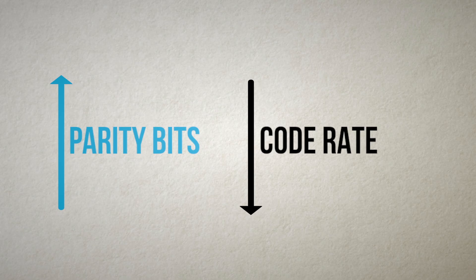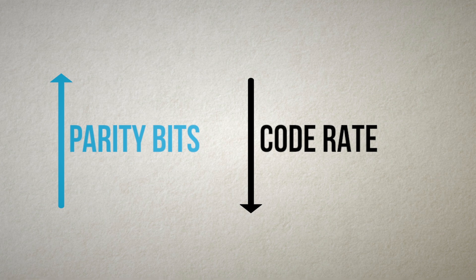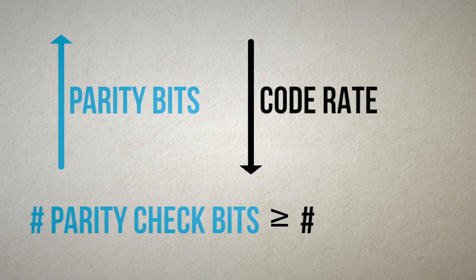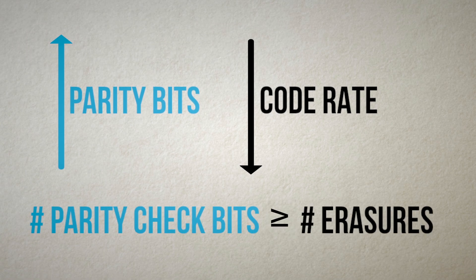And as we add more parity check bits, we increase the number of erasures we can potentially correct, at the cost of gradually decreasing the code rate. In general, the number of parity check bits should be at least equal to the number of erasures if we want to have a chance of correcting them all.